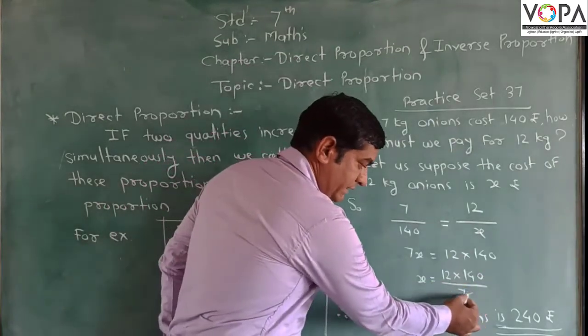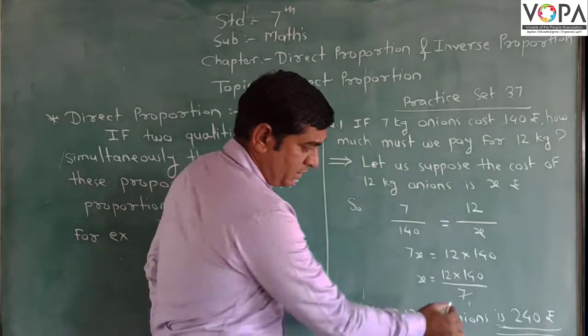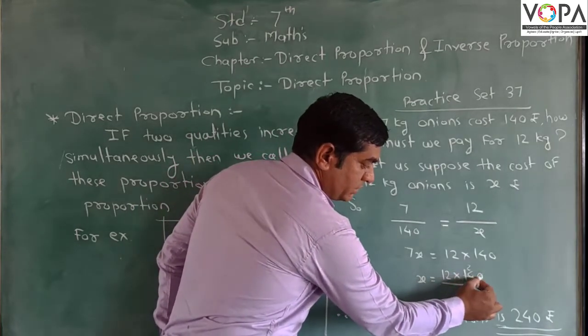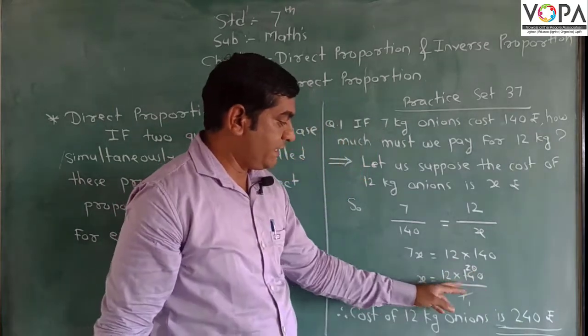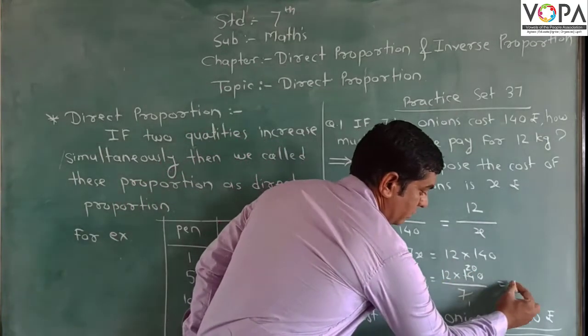Now we do the calculation. Divide 7 into 140, we get 20. Then 20 into 12, we get the answer 240.